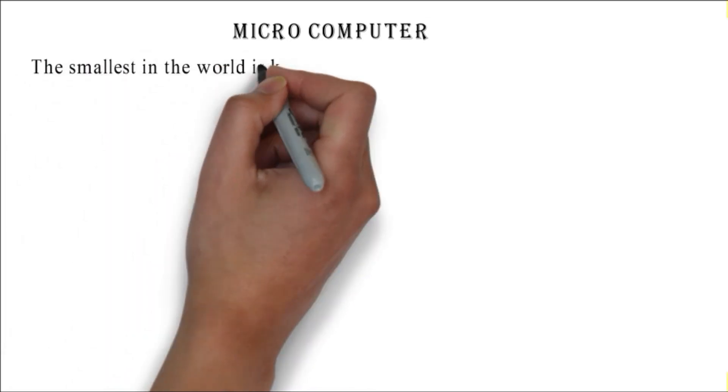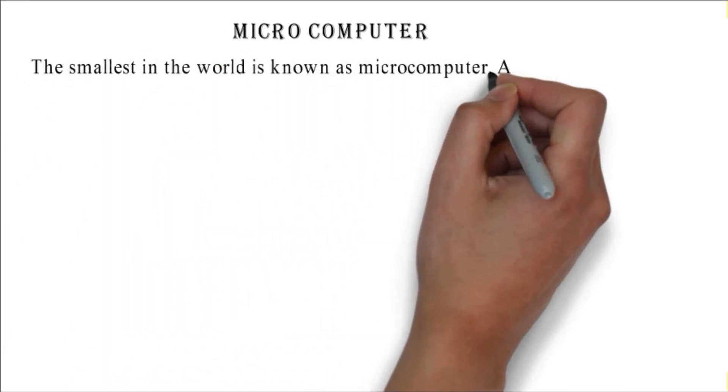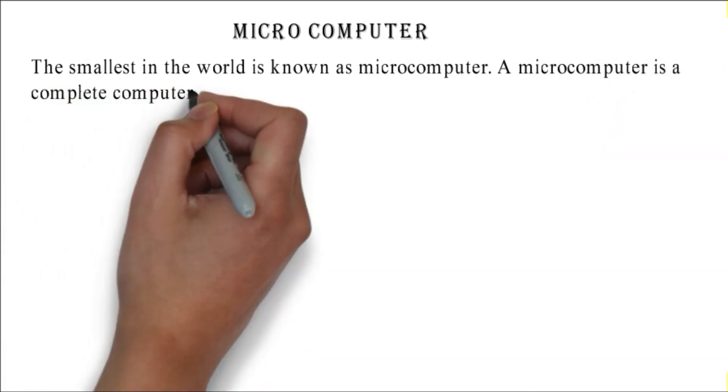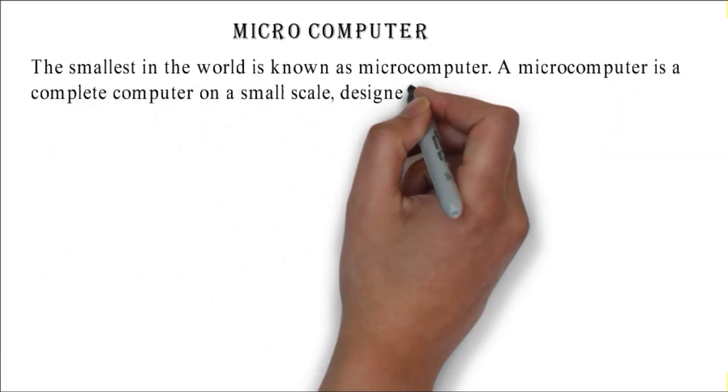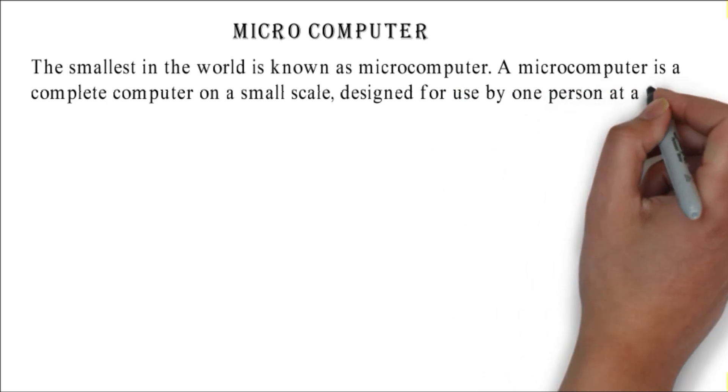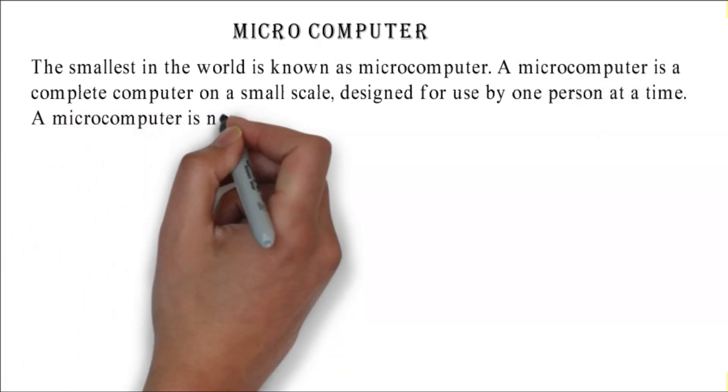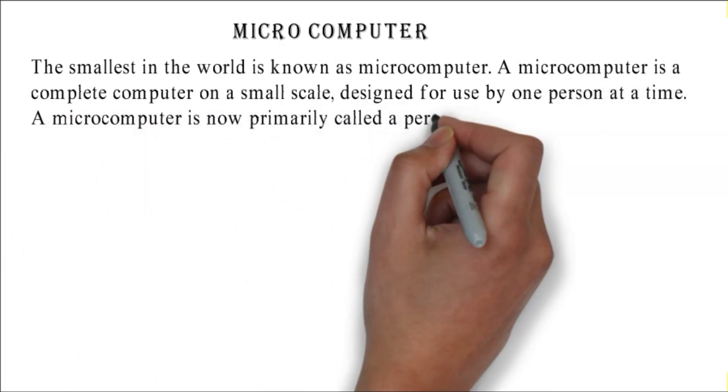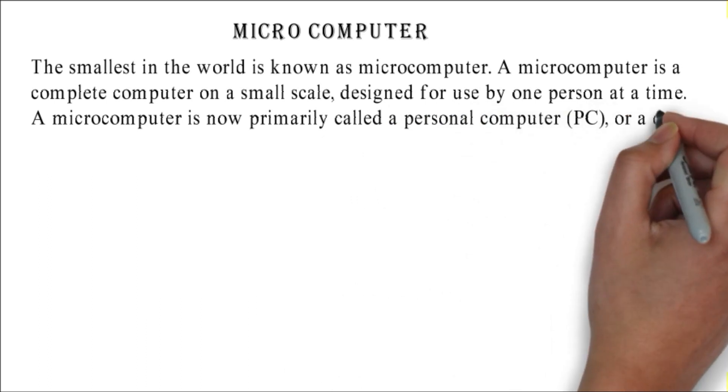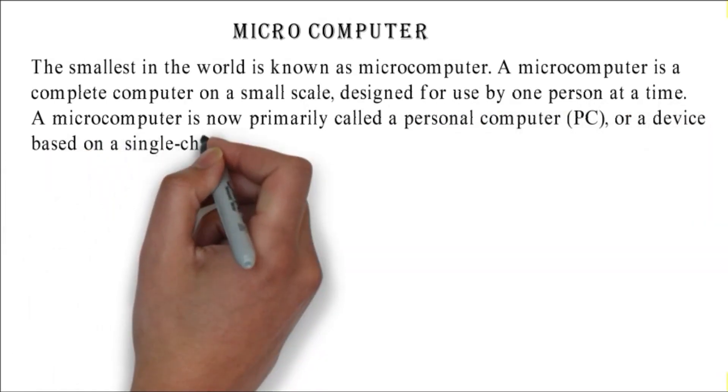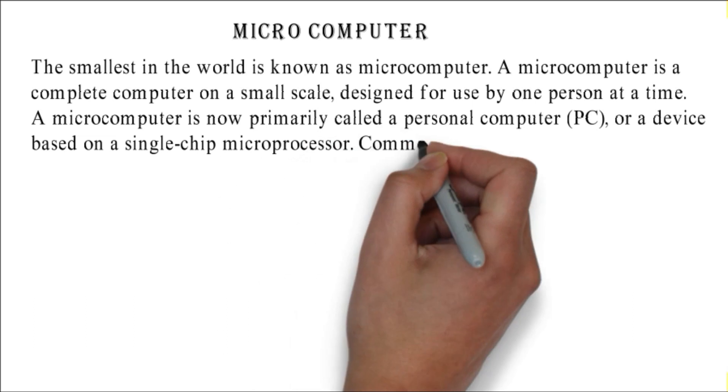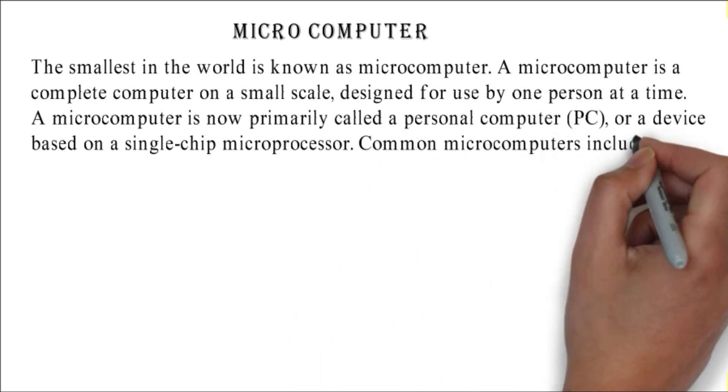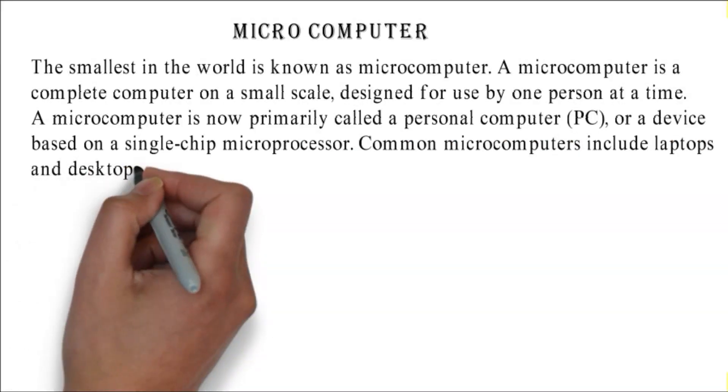Microcomputer: the smallest in the world is known as microcomputer. A microcomputer is a complete computer on a small scale, designed for use by one person at a time. A microcomputer is now primarily called a personal computer (PC) or a device based on a single-chip microprocessor. Common microcomputers include laptops and desktops.